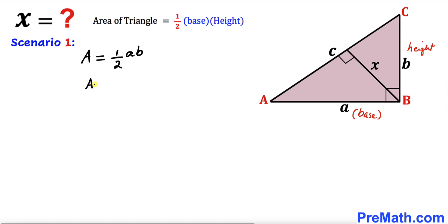Write area equals A times B divided by 2. Let me call this equation number 1. Now let's consider scenario 2.